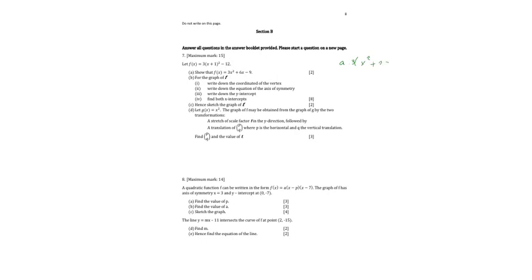So this will give us 3x² + 6x + 3 - 12, which equals 3x² + 6x - 9. So we're done with this.